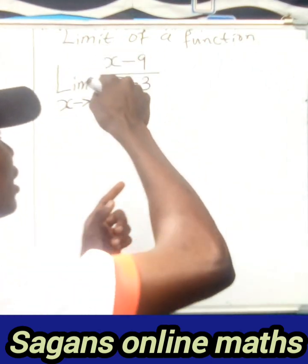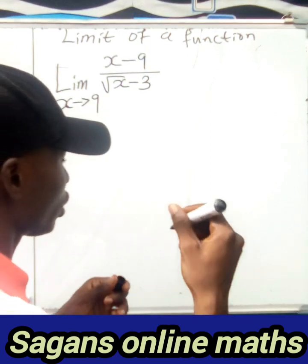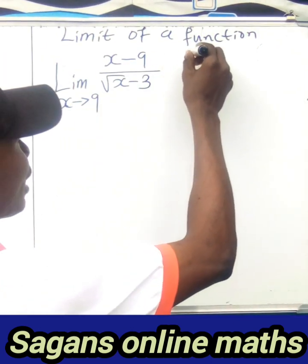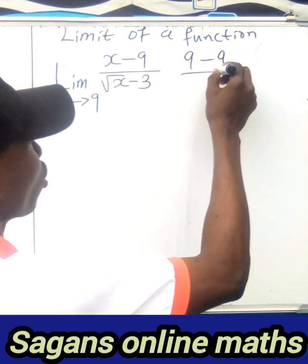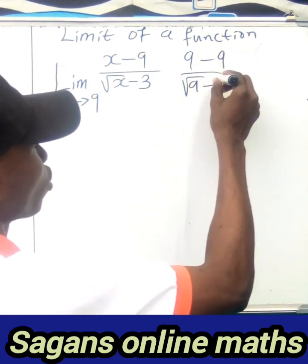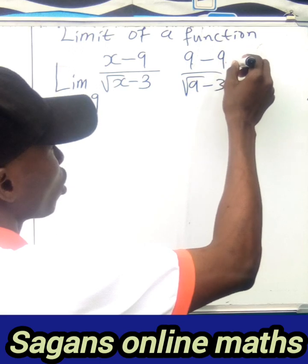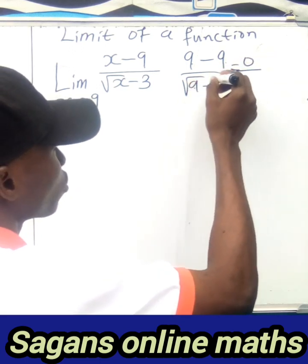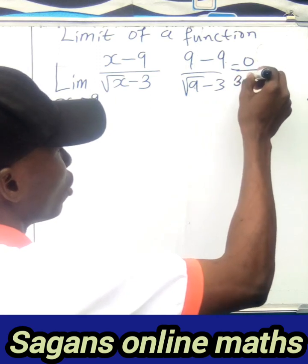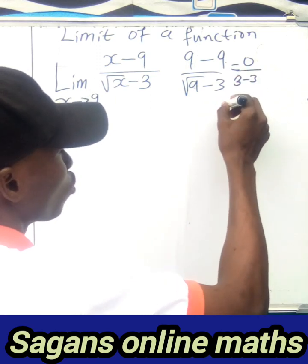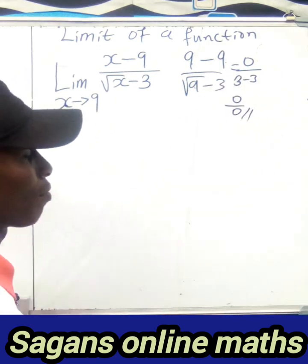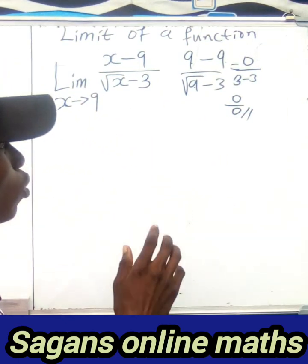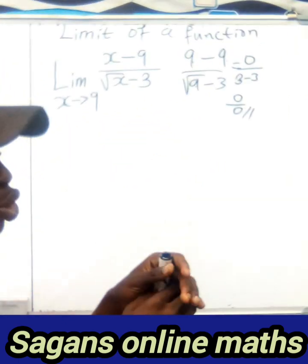I've seen a lot of students make a serious mistake here. When you see that x tends to nine, you might just substitute nine directly. If you do that, you get nine minus nine over square root of nine minus three, which is zero over (three minus three), giving zero divided by zero — and this is undefined. Let me show you how to solve this properly.